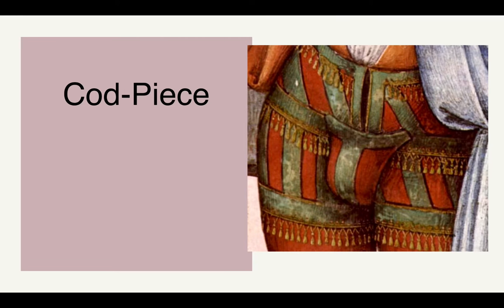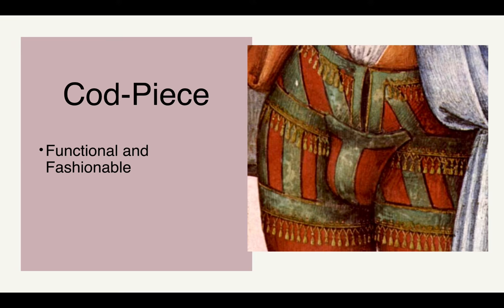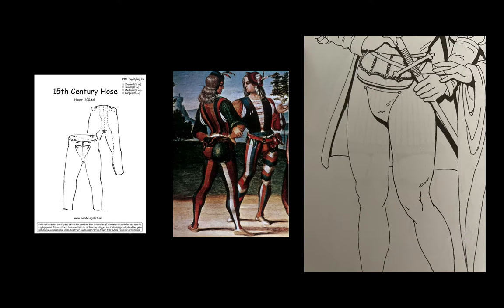We also see the introduction of a codpiece, because the hose were now conjoined at the center. It's a triangular shape of fabric tied to the front of the crotch, and as you may have guessed, it is both functional and fashionable — it could be made of a different fabric, decorated, embellished, emphasizing male anatomy. In the high Renaissance, we really start to see codpieces become more and more exaggerated.